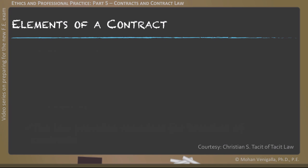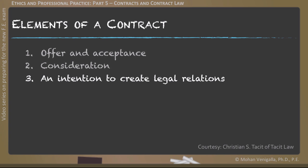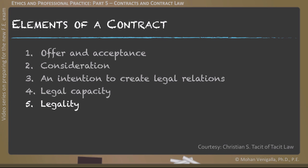There are six elements to a contract. First, there is an offer and then there is an acceptance. The consideration of the contract. An intention to create legal relations. The legal capacity of the people entering into the contract. The legality of the contract itself. And then the formalities by which the contract is executed.